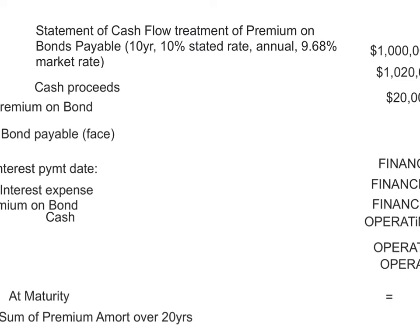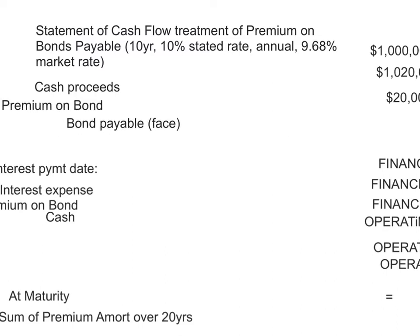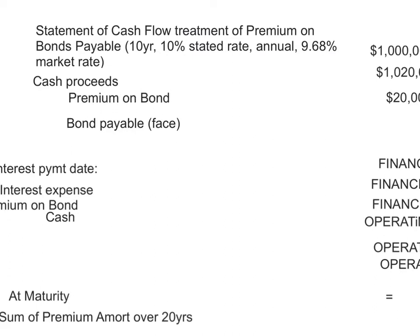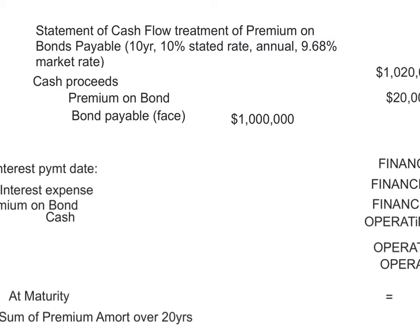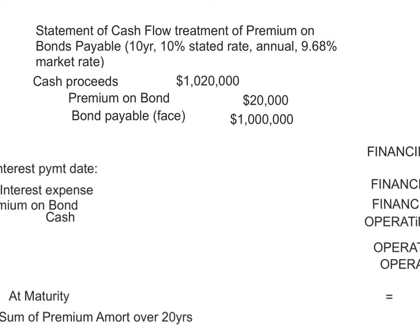Starting with a basic bond: 10% stated rate, 9.68% market rate, a 10-year bond with annual interest payments. When we first issue the bond, the face amount gets recorded as the bond payable, the proceeds are the actual cash received, and the difference goes to the premium account.